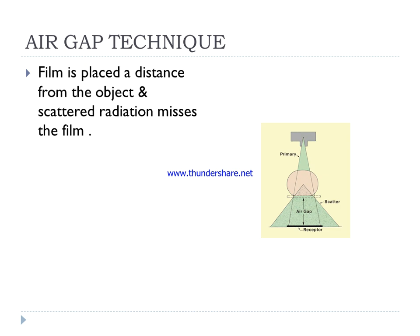Another technique is called the air gap technique. In the air gap technique, the film is placed at a distance from the object so that scattered radiation misses the film. In the diagram, the x-ray tube emits primary radiation toward the receptor or detector. The patient is positioned in between, and the gap between the patient and the receptor is referred to as the air gap.